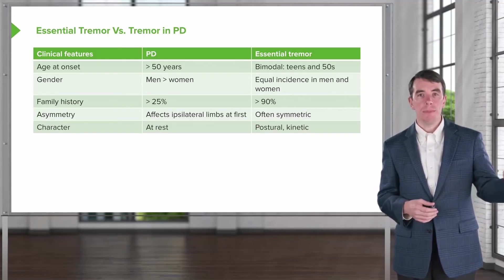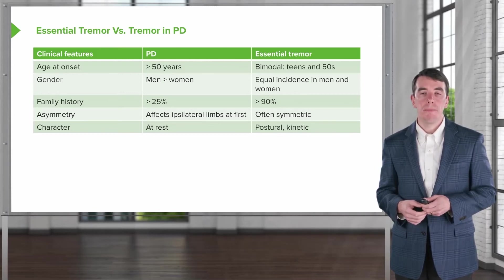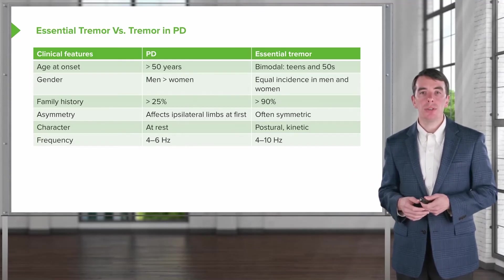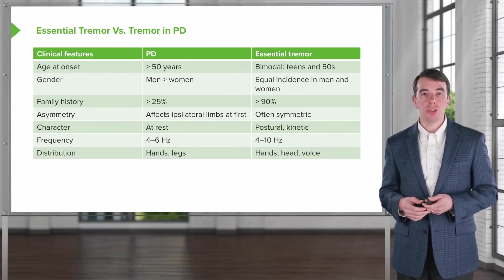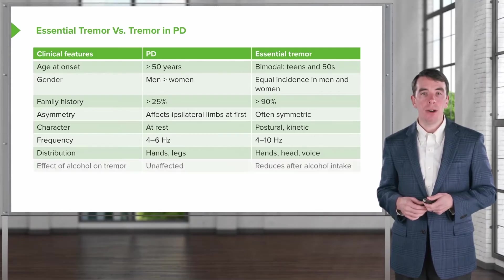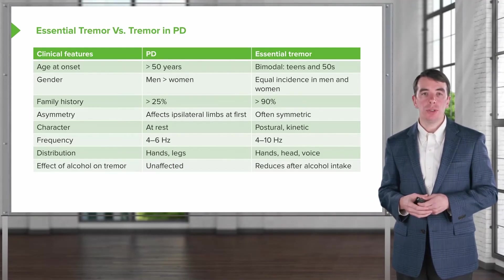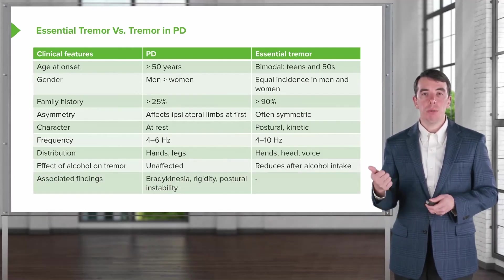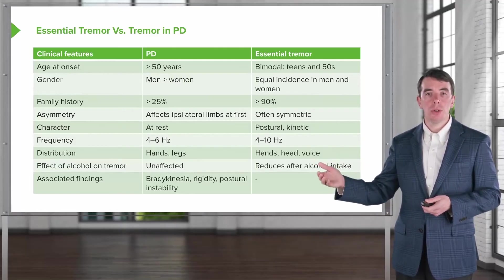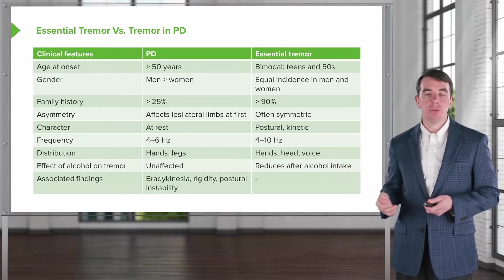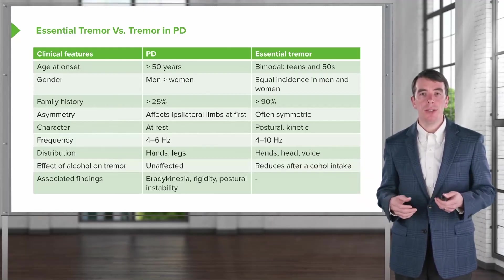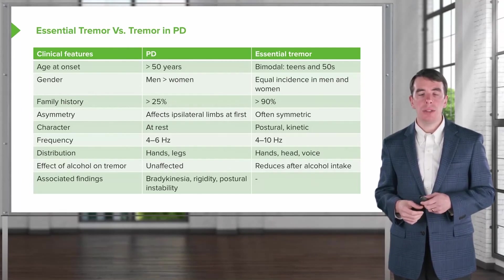The character of Parkinsonian tremor is rest, while essential tremor is postural and kinetic. Parkinsonian rest tremor has a lower frequency of 4–6 Hz, whereas essential tremor is higher frequency. Distribution in Parkinson's disease is hands and legs; in essential tremor, it includes hands and head titubation. Alcohol does not change Parkinsonian tremor but reduces essential tremor. Parkinson's disease also has associated findings of bradykinesia, rigidity, and postural instability. These features help differentiate the two conditions clinically.